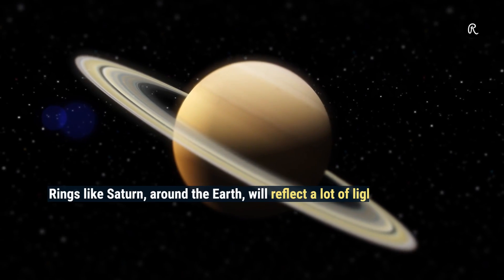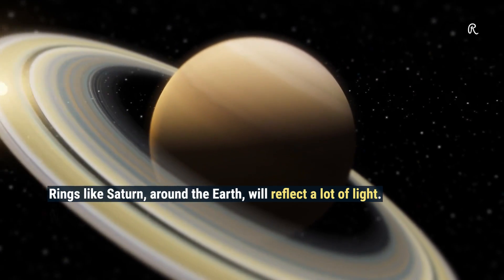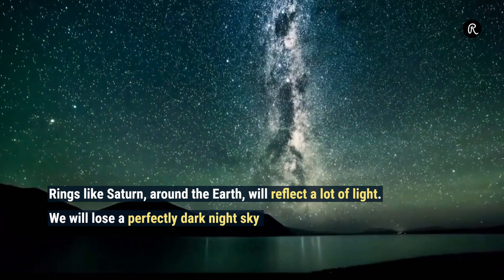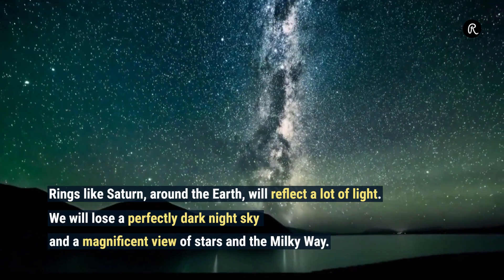Rings like Saturn around the Earth will reflect a lot of light. We will lose a perfectly dark night sky and a magnificent view of the stars and the Milky Way.